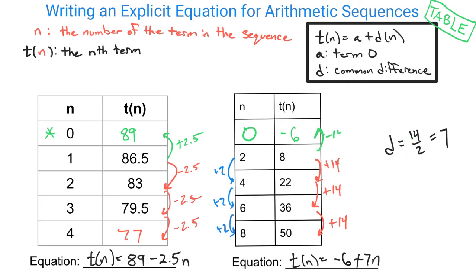So in an arithmetic sequence from a table, you make sure that your n values are going up by 1. And if they're not, you check out what they're going up by. And you look at where your y values or your outputs are changing. So 14 in this case, and then that's your common difference.